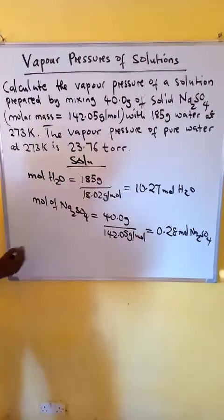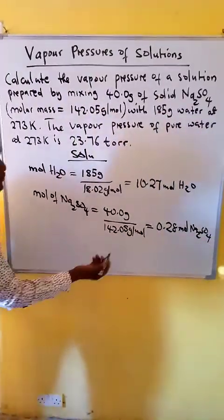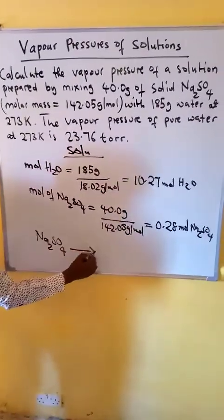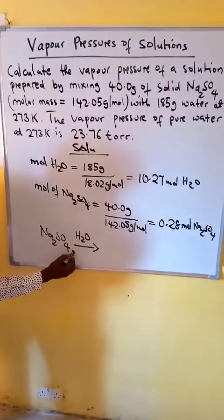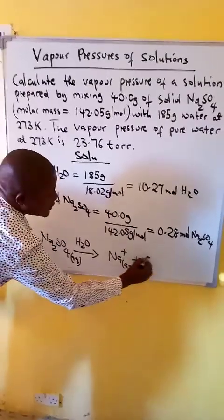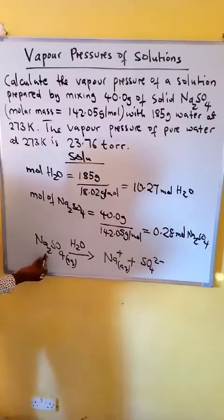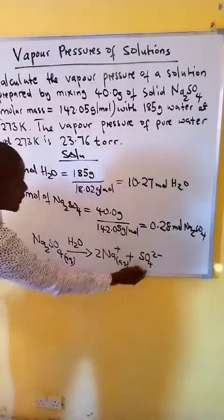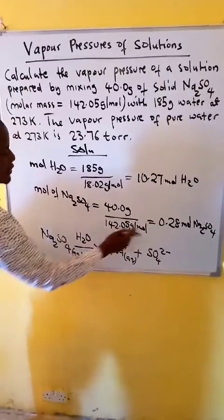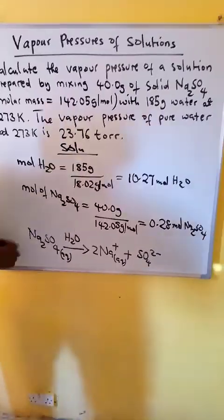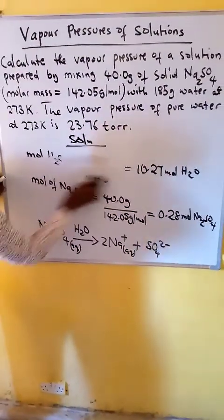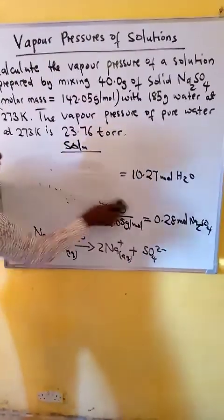Now in this case, since sodium sulfate is an ionic solid, it will dissolve in water producing two moles of sodium ion and one mole of sulfate ion. So sodium sulfate in water will dissociate to form sodium and sulfate ions — two moles of sodium and one mole of sulfate — giving three moles total. So now we are going to multiply the number of moles by three.